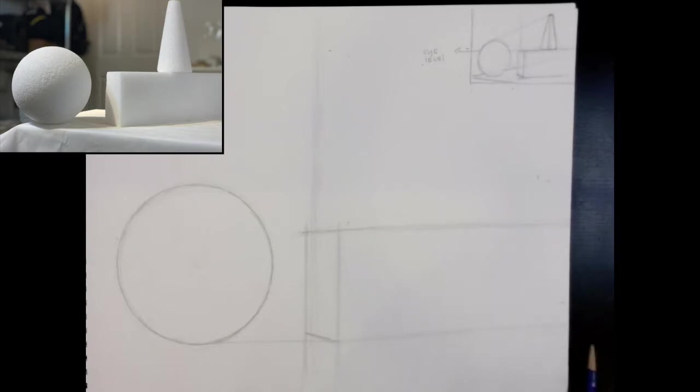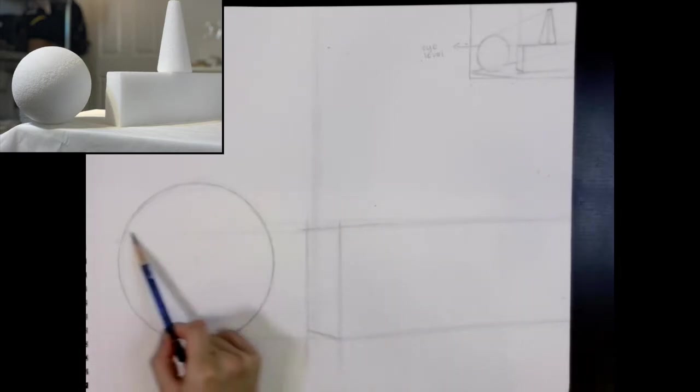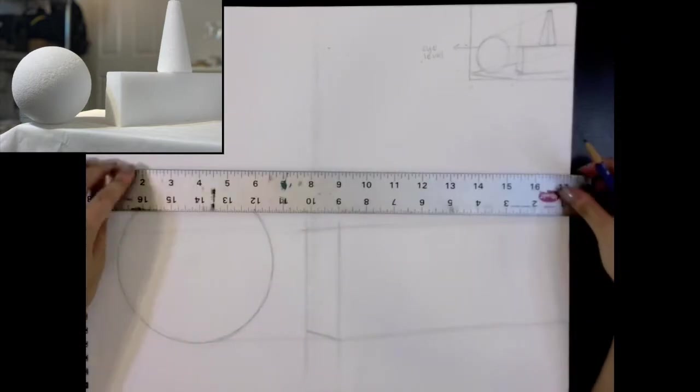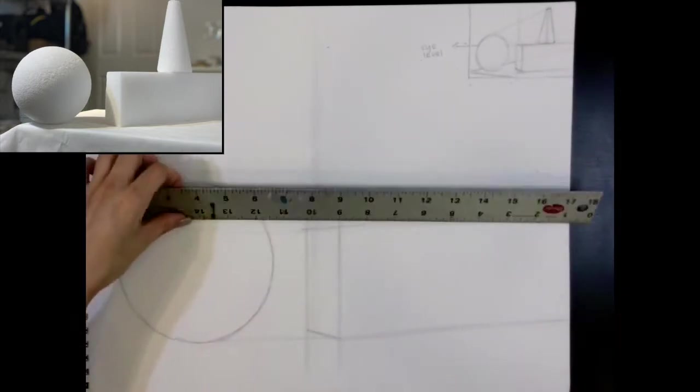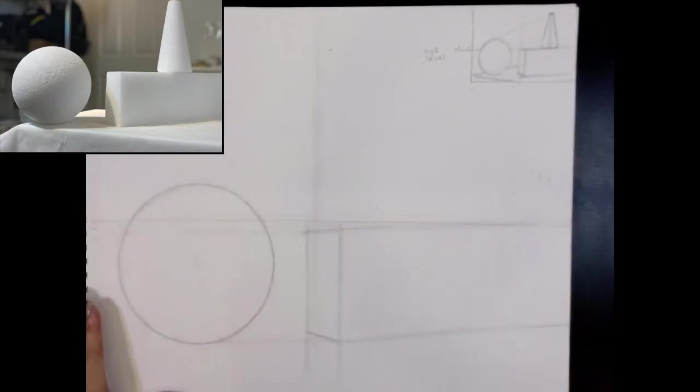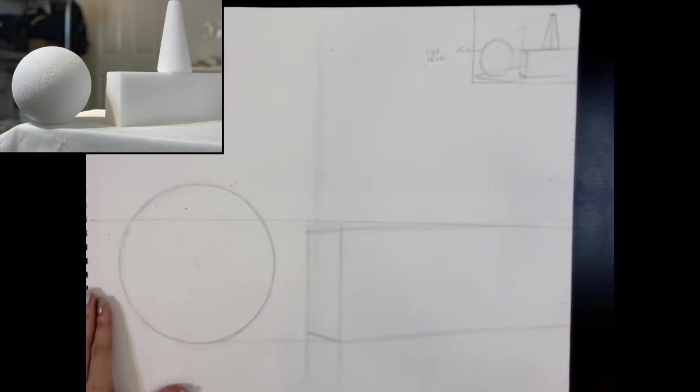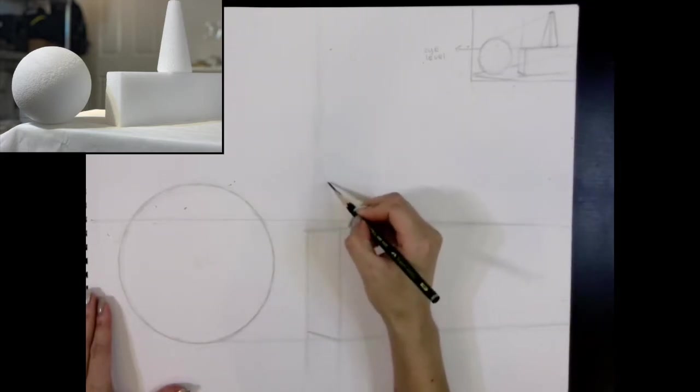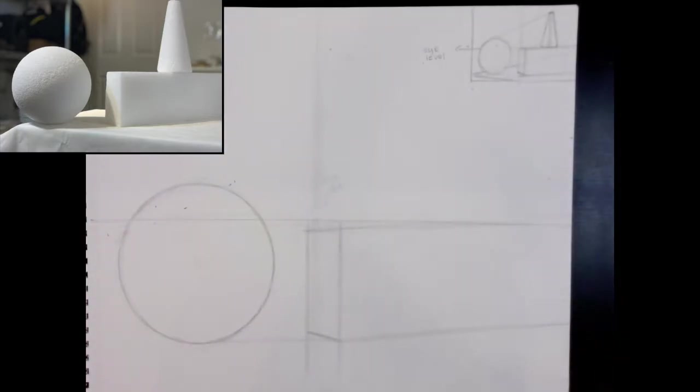For any rectangular shapes like a cube or rectangular prism, it's helpful if you can identify if the cube is sitting in one point perspective or two point perspective. So I went ahead and drew in the eye level, that's the horizon line. So that's where your sight is in relation to your subject matter.